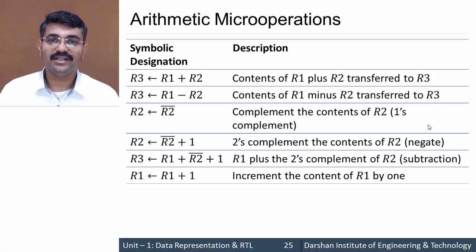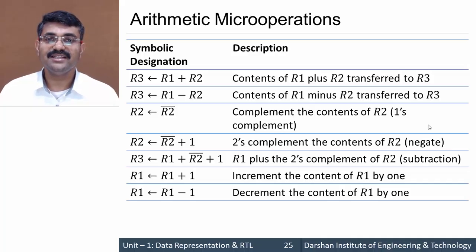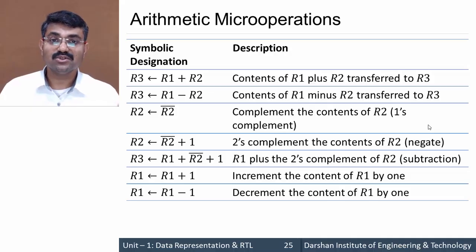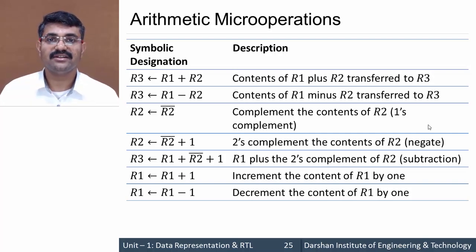Next we have r1 = r1 + 1, which means increment the content of r1 by 1 — our increment operation. And lastly, r1 = r1 - 1, which means decrement the content of r1 by 1, so 1 is subtracted from r1 and the result is stored back into r1. So these are all the arithmetic micro operations in our basic computer. We'll see them in detail one by one and discuss the hardware circuit for implementing them in later sessions.